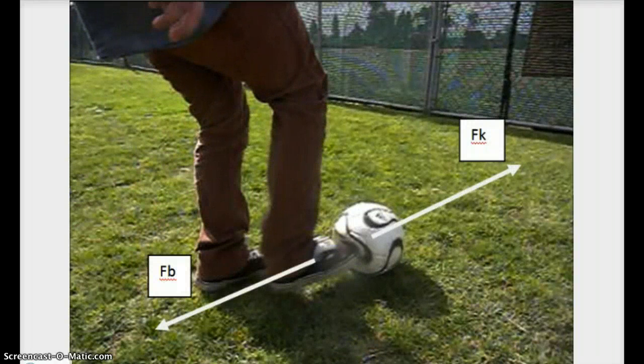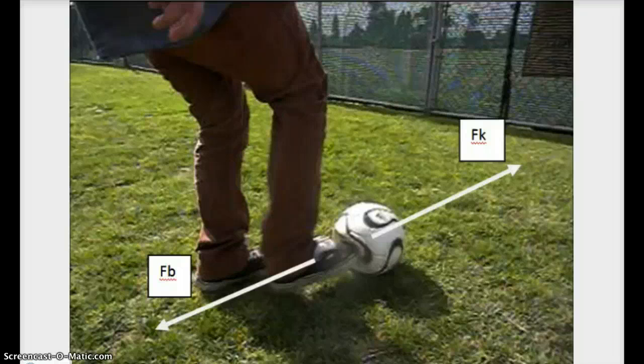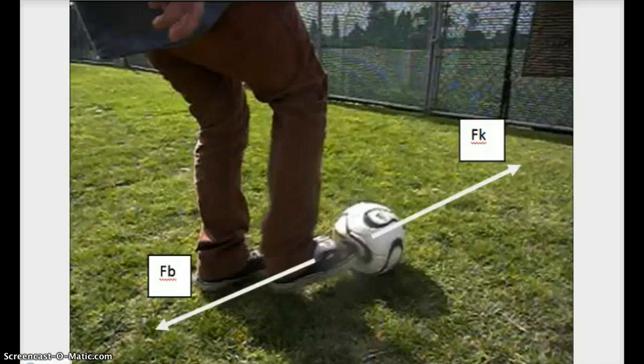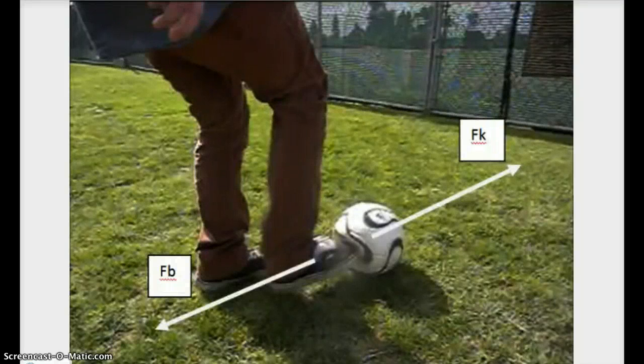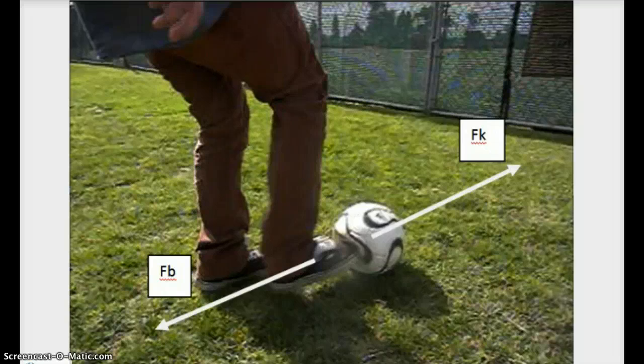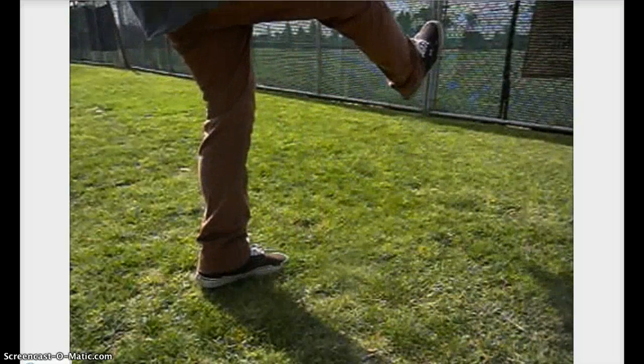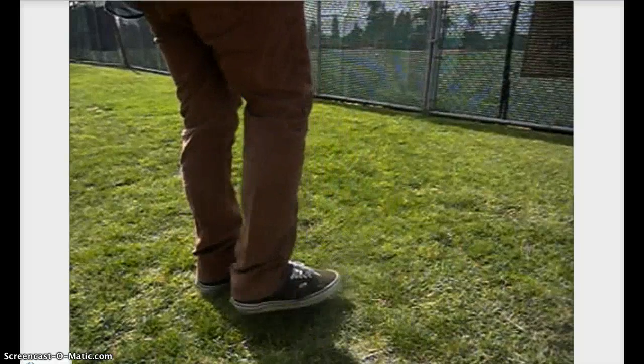Now this is an action-reaction pair. The ball exerts the force on Jake's foot, while Jake's foot exerts the same force on the ball, which refers to Newton's third law. So why doesn't Jake or the other soccer players fly backwards after they kick the ball? Because the ball has less mass. I hope you all noticed the toe kick.